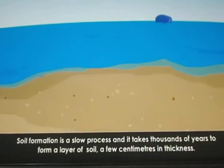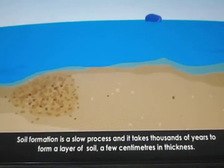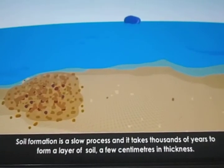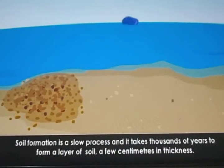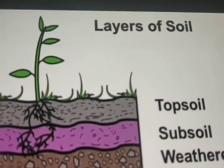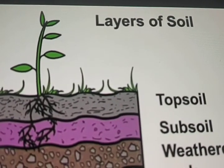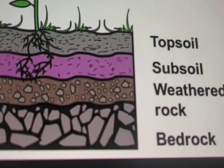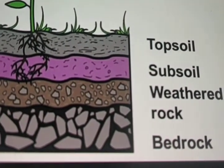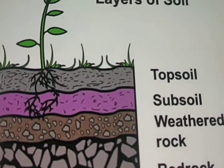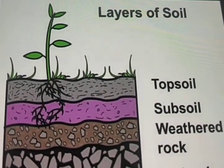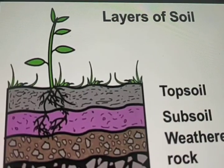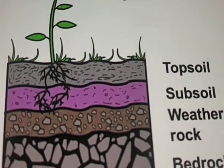Smaller pieces of rocks undergo various changes and finally form soil. Soil formation is a slow process and it takes thousands of years to form a layer of soil a few centimeters in thickness. The soil itself is not the same throughout — it also has layers of structure, as you can see in this picture. The first layer of soil is called the top layer of soil.